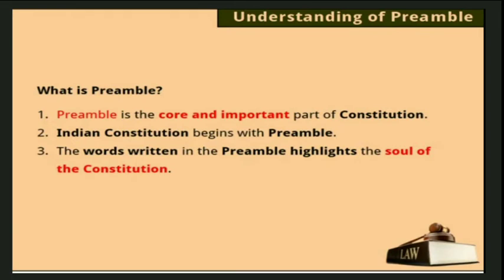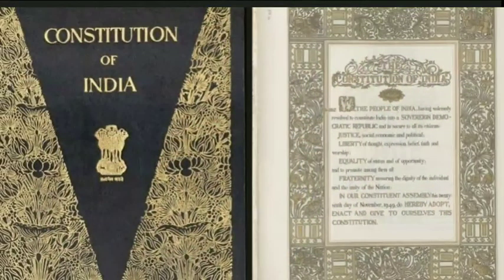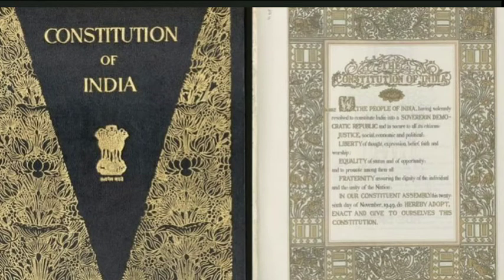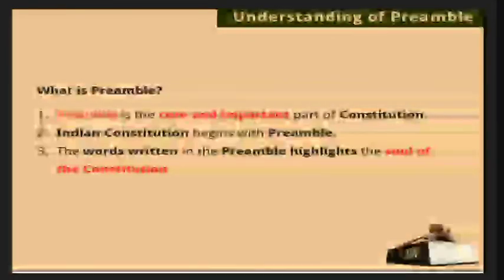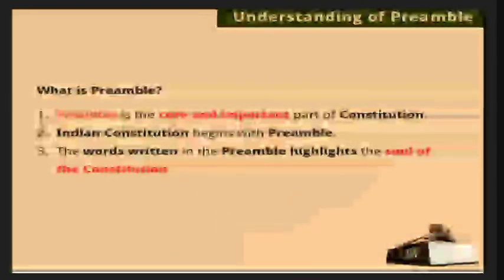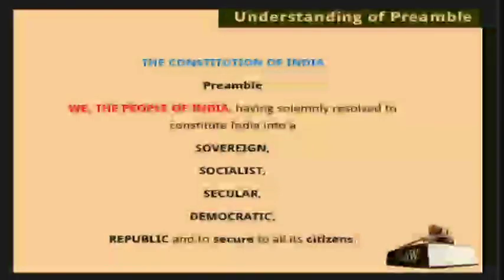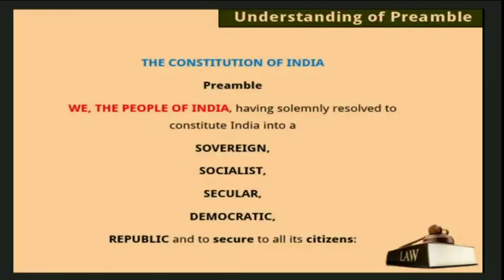The Preamble is the core and important part of the Constitution. 'Core' because it precisely summarizes the entire Constitution. The Indian Constitution begins with the Preamble — the very first page starts with it. The words written in the Preamble highlight the soul of the Constitution. The soul of the Constitution — its very existence — is contained in these words of the Preamble.